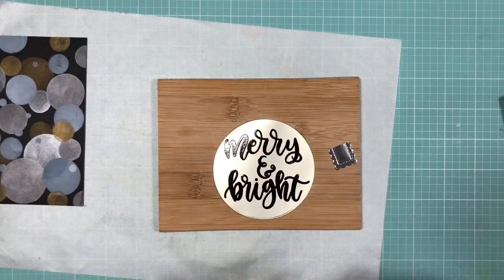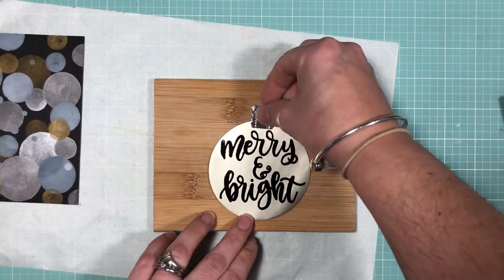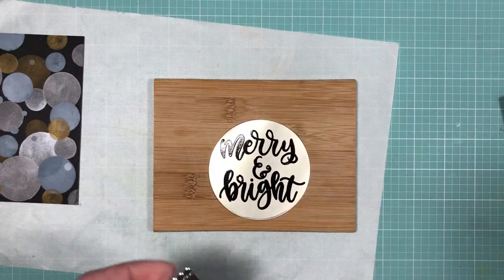To create the top of my ornament, I used the My Favorite Things Stitch Mini Scalloped Rectangle, and I'll trim it to create the front top and the back top of the ornament.